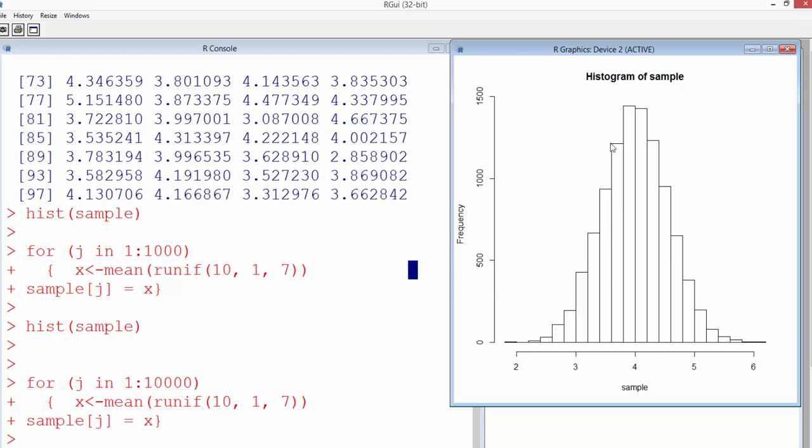But the actual random variable y that we started with, it was distributed uniformly. It was having uniform distribution. It's taken from uniform distribution, but the average, when you plot it over a large number of trials, then it's distributed normally. So that basically is what is known as the Central Limit Theorem.